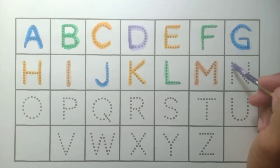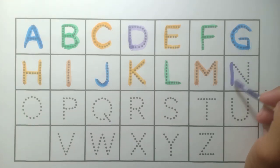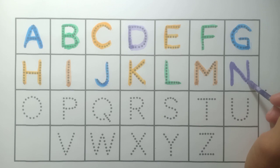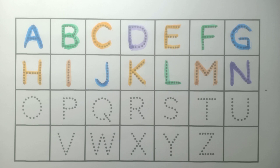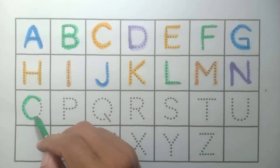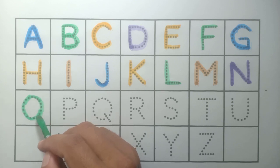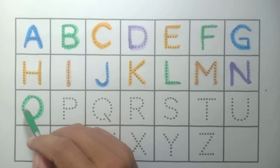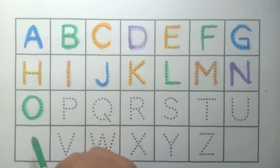And N, N for nest, purple color. And O, O for owl, green color.